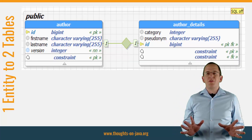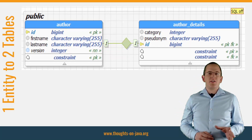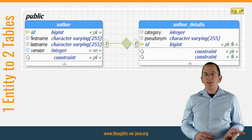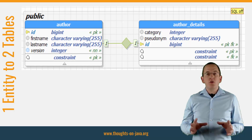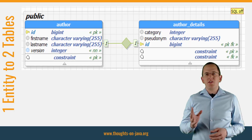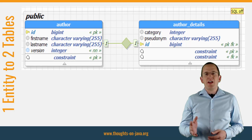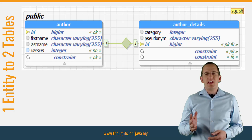OK, enough theory. Let's take a look at a simple example that maps the Author and the AuthorDetails table to the Author entity. You can see both tables here on the slide. Let's get into the IDE and take a look at the entity mapping.